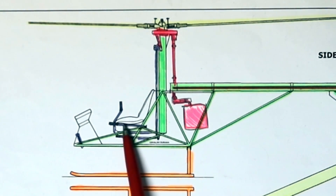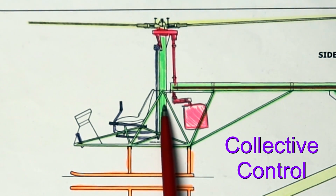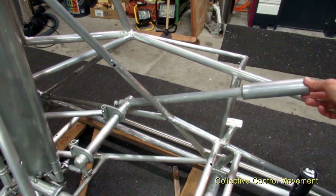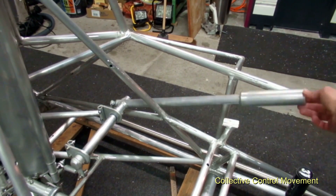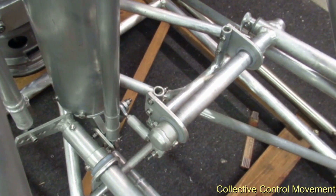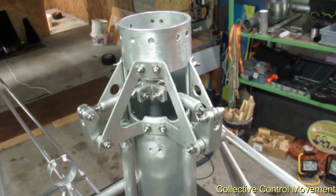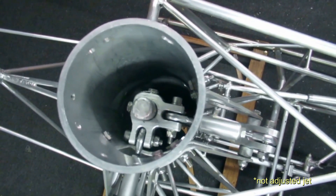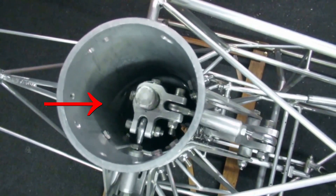The next flight control is called the collective. The collective changes the pitch angle of the main rotor blades all at the same time — all the blades change equally — and as a result, the helicopter increases or decreases its total lift. Here you can see how the collective and cyclic controls are linked together inside the main rotor mast.